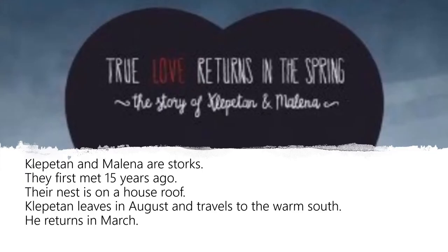The true love returns in the spring is the story of Klepetan and Malena. And the correct answers are: Klepetan and Malena are storks. They first met 15 years ago. Their nest is on a house roof. Klepetan leaves in August and travels to the warm south. He returns in March.